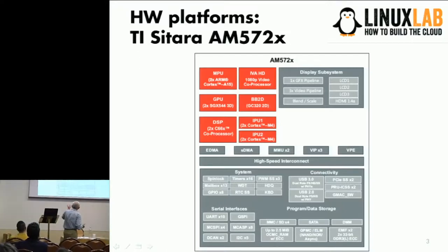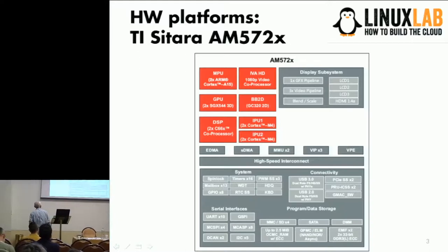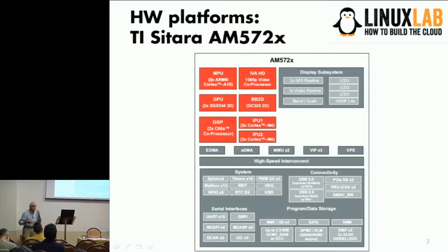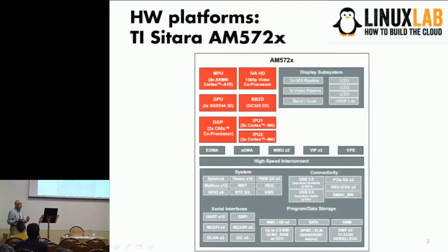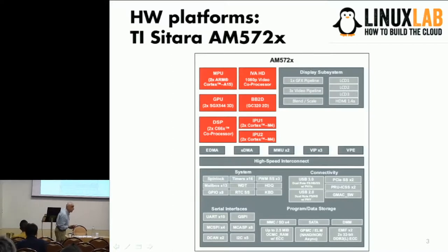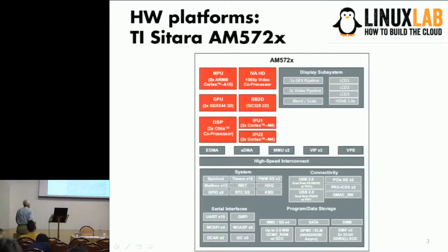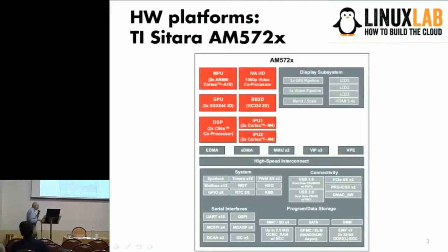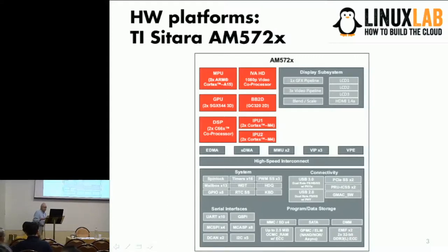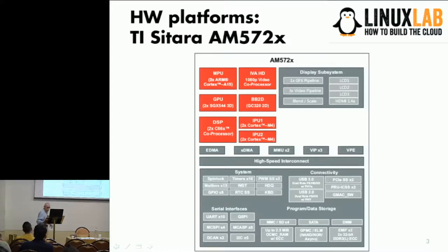It's a system on chip, so you find a lot of peripherals in it and beside it several different processors — several different cores. They are different from each other: you can find on it a couple of ARM A15 microprocessors, but you also find a couple of DSPs — digital signal processors — a couple of dual-core Cortex M4, and beside that a couple of other small microcontrollers. So that's a multi-core architecture, but it's not a homogeneous one like the ones we are accustomed to on our PCs or our mobile devices.